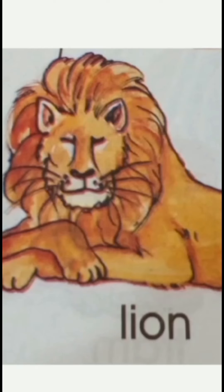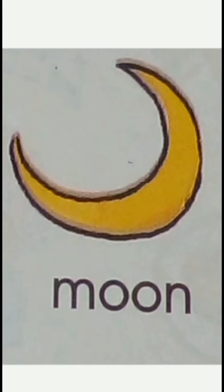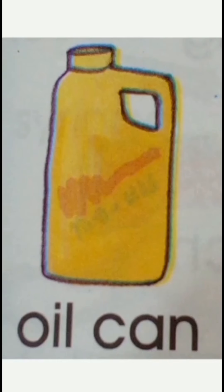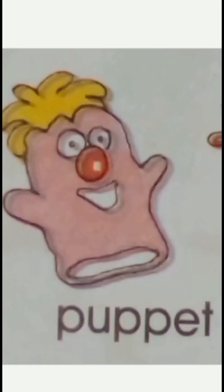K for kettle, L for lion, M for moon, N for napkin, O for oil cane, B for puppet.